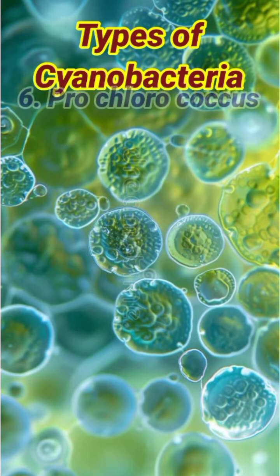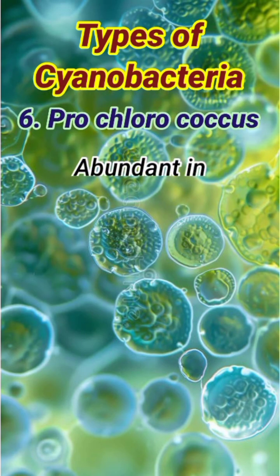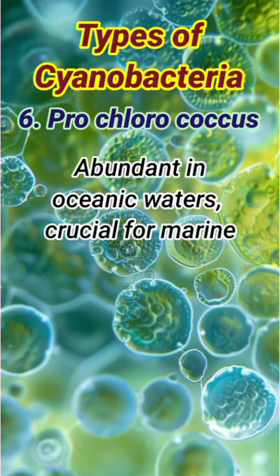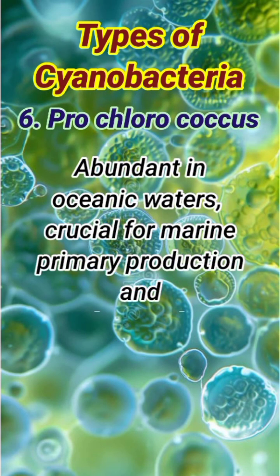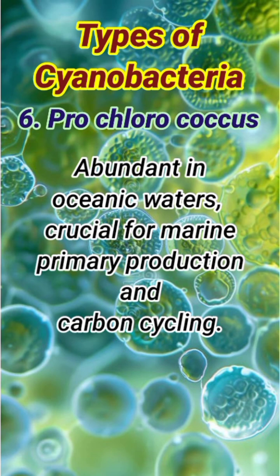Number 6: Prochlorococcus. Abundant in oceanic waters, crucial for marine primary production and carbon cycling.